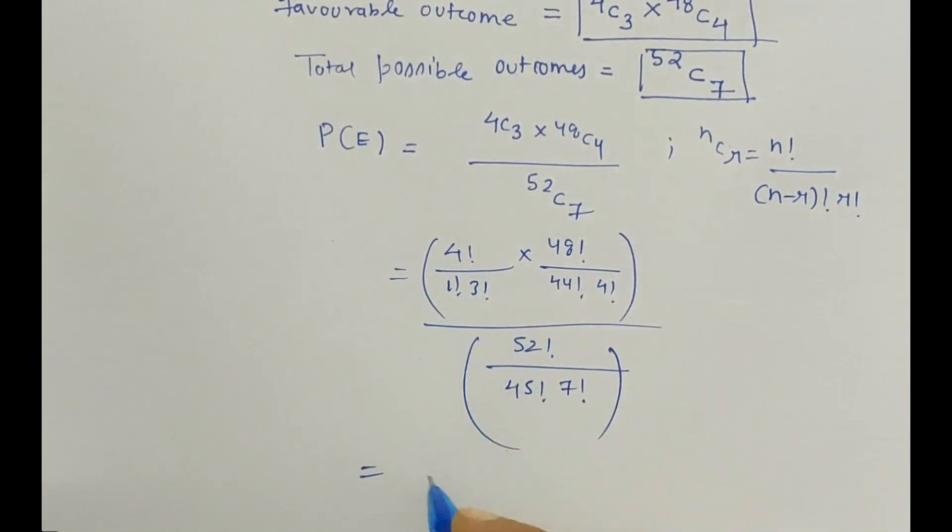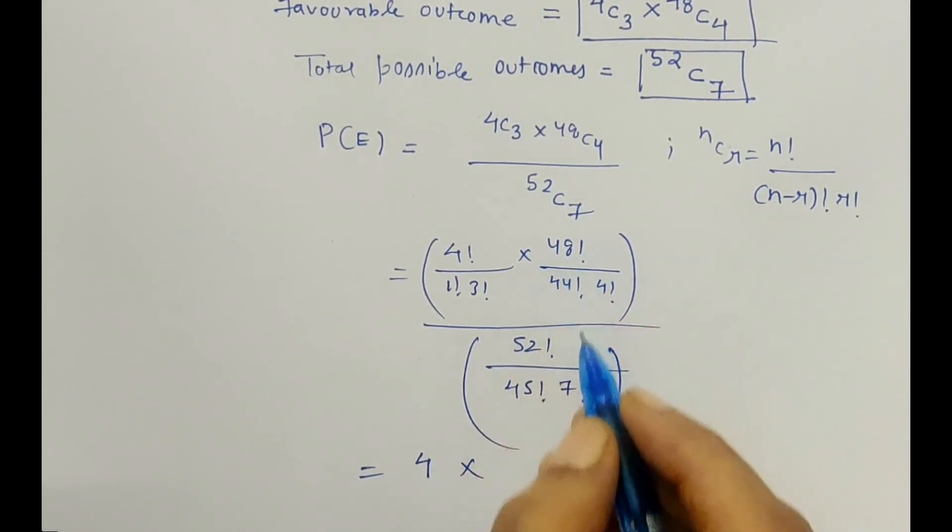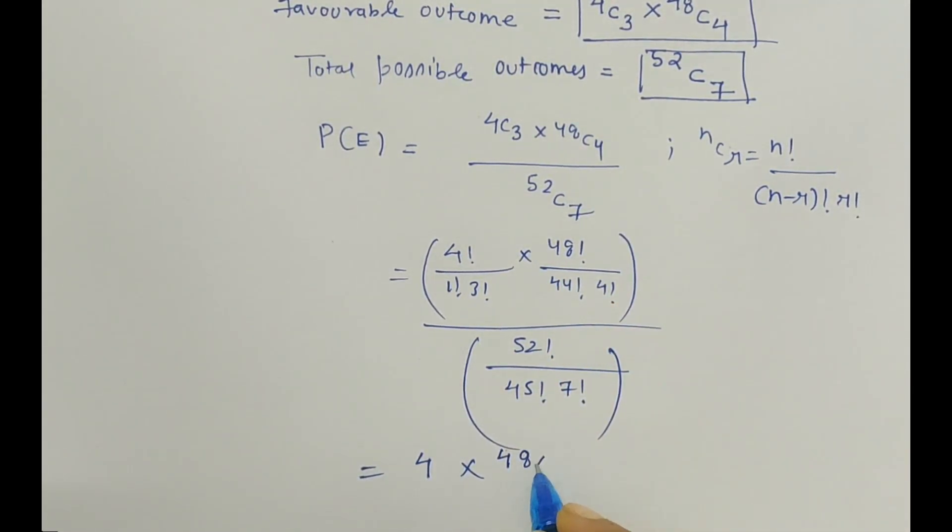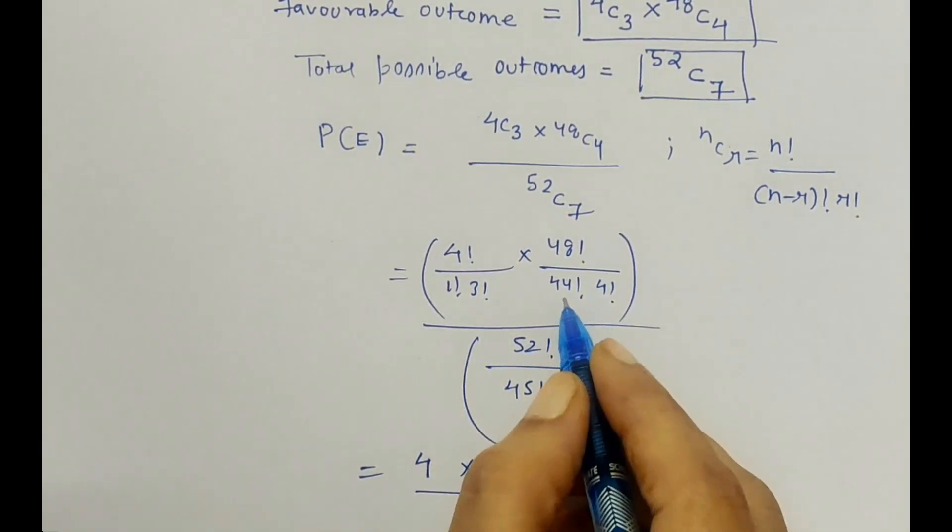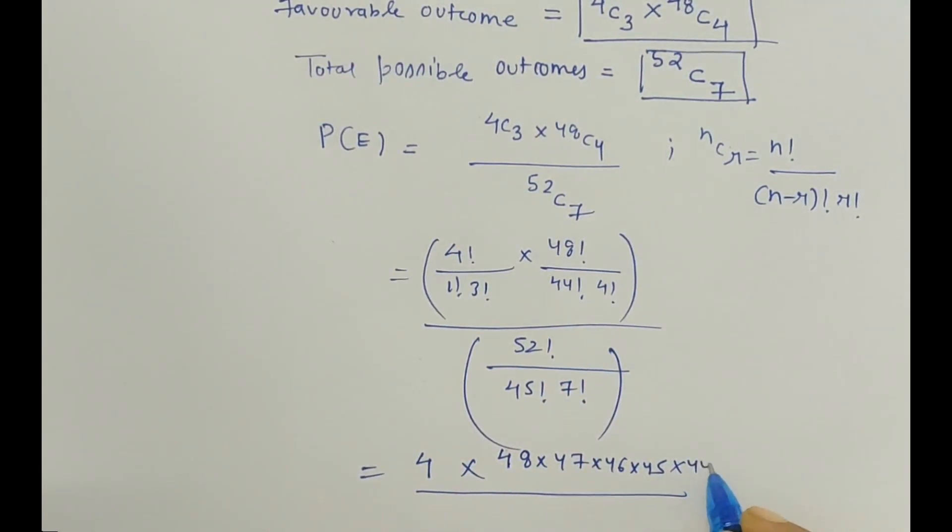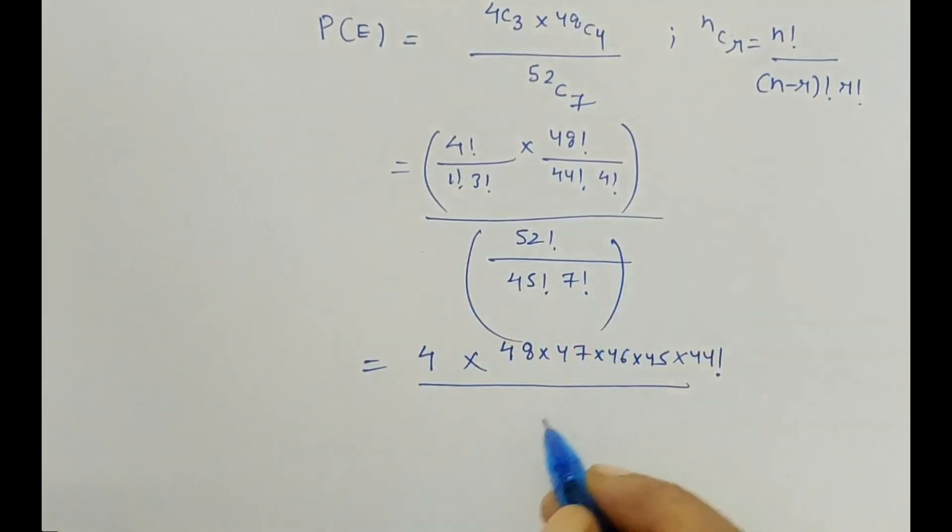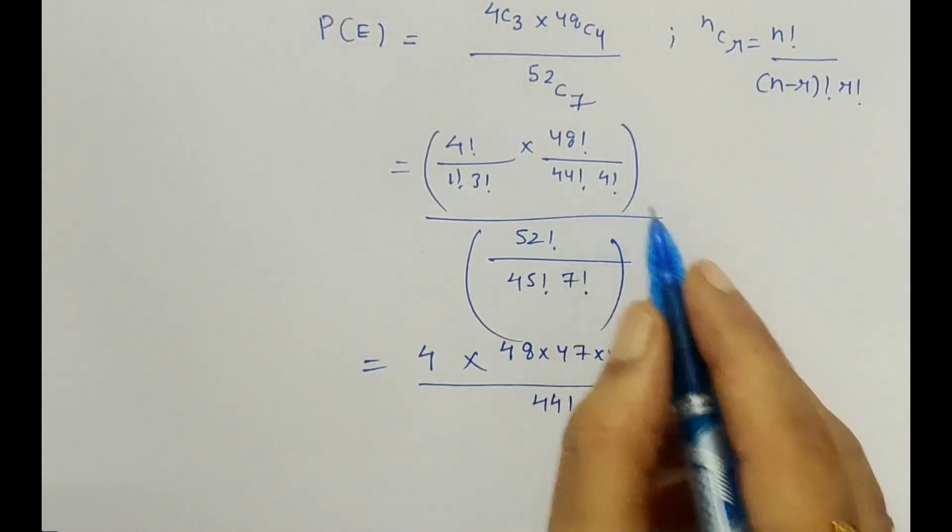Now just reciprocate it. So this gives us 4 times we can expand this: 48 times 47 times 46 times 45 upon 44 factorial, times 4 factorial. And the denominator is 4 factorial times - again expand this - 52 times 51 times 50 times 49.